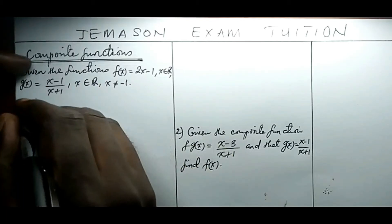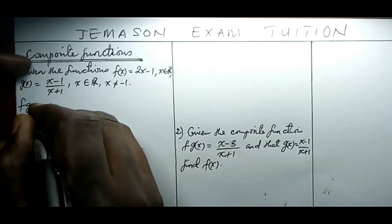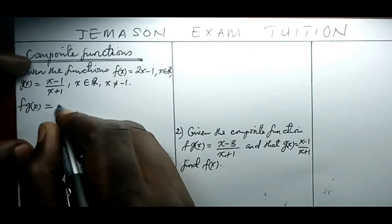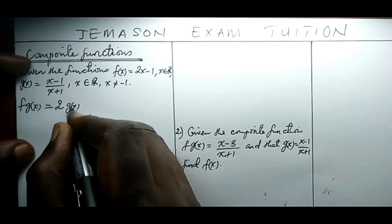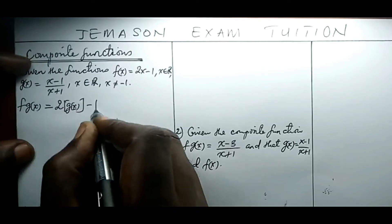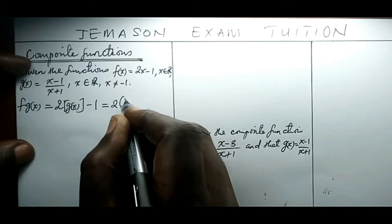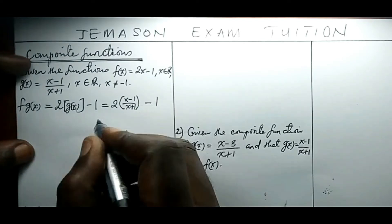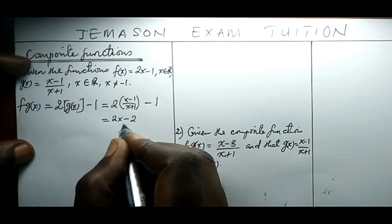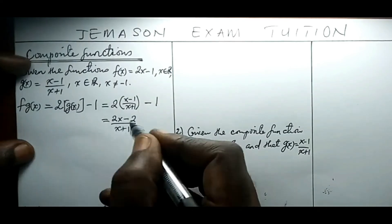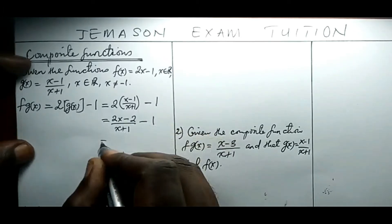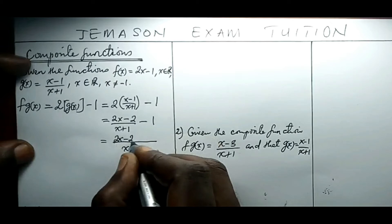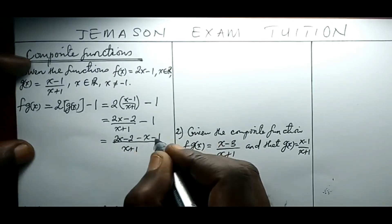You can then be required to find the composite function fg of x. That simply means substitute g of x in f, and so we're talking of 2 times g of x minus 1, which gives 2 into x minus 1 all over x plus 1. This gives 2x minus 2 all over x plus 1, minus 1. The LCM is x plus 1, and we have 2x minus 2 minus x minus 1.